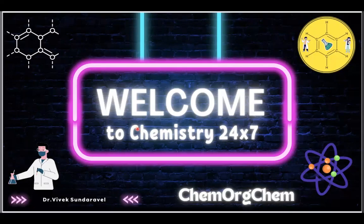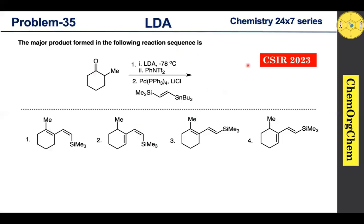Let's see what today's problem is. This problem is from CACR 2023. According to this question, the substrate initially reacts with LDA, followed by bis-trifluoromethanesulfonyl aniline in the second step, which reacts with palladium tetrakis in the presence of lithium chloride with an organostannane to produce one product. There are four options — let's figure out together which one is correct.